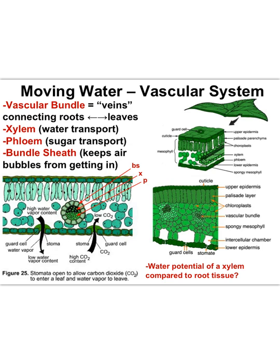Sugar is made during photosynthesis, and then that sugar travels all over the plant to where it's needed — and sometimes even into the root, where sugar can be stored, or stored in something big like a potato. That sugar travels through the vascular system in the phloem. The bundle sheath are specialized cells that wrap the xylem and phloem together, keeping air bubbles out, because air bubbles can prevent efficient transport of sugar and water.